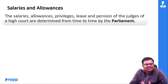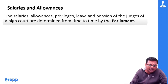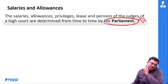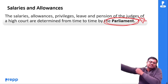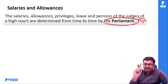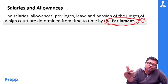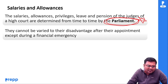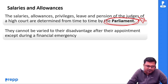Salary and allowances की बात है तो Parliament determine करती है — salaries, allowances, privilege, leave, pension of judges, not state assembly। इस पे भी questions पूछे जाते हैं। And आप उसको vary नहीं कर सकते हो except during a financial emergency।